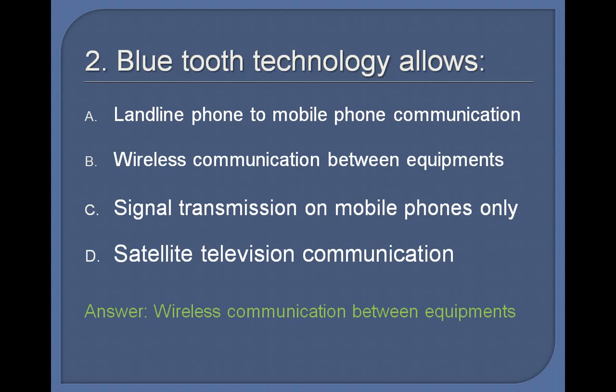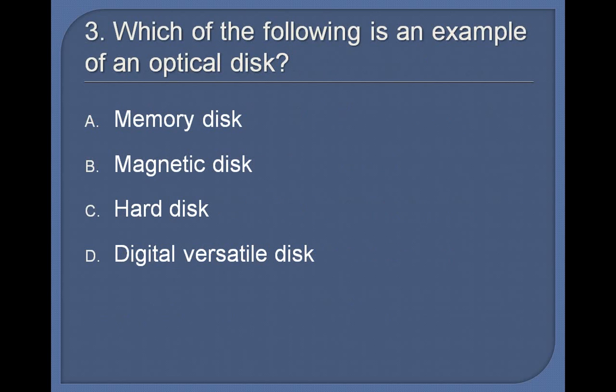3. Which of the following is an example of an optical disk? Memory disk, Magnetic disk, Hard disk, Digital versatile disk. Answer: Digital versatile disk.